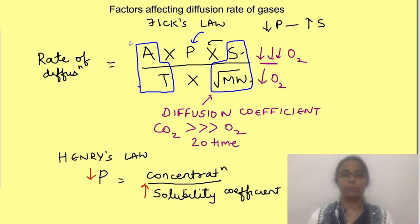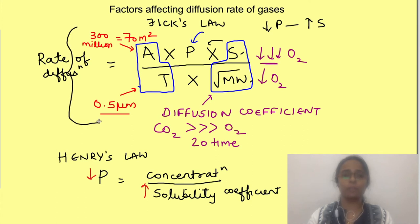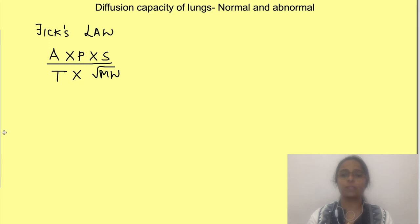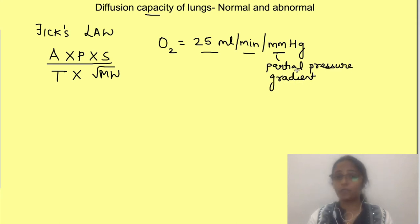Now let's consider the properties of the membrane important for diffusion: its cross-sectional area and its thickness. The lungs consist of approximately 300 million alveoli, which in total have a cross-sectional area of 70 square meters. On average, the thickness of the respiratory membrane is 0.5 micrometers. For this particular membrane, the rate at which different gases cross is expressed by the diffusion capacity of the lungs for a given gas. Normally, diffusion capacity of the lungs for oxygen is 25 mL per minute per mmHg — meaning 25 mL of oxygen will cross the membrane per minute for each mmHg of partial pressure difference.